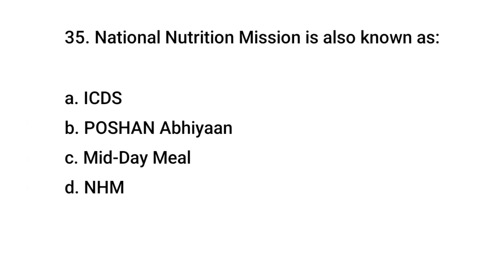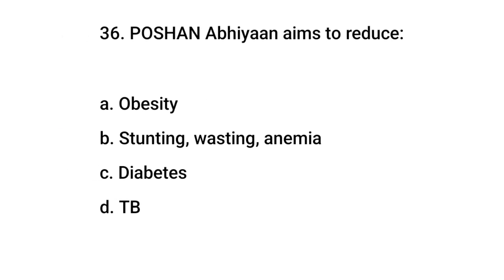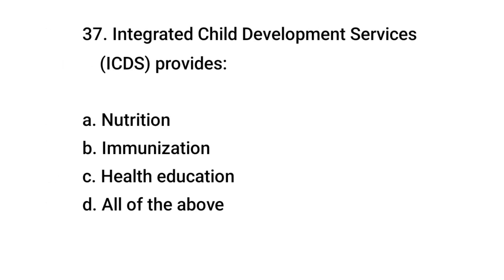Question number 35: National Nutrition Mission is also known as — the right answer is B: Poshan Abhiyan. Question number 36: Poshan Abhiyan aims to reduce — the right answer is B: Stunting, wasting, anemia. Question number 37: Integrated Child Development Service provides — the right answer is D: All of the above.